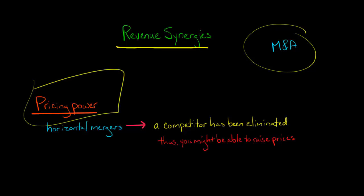The first is increased pricing power. So when you have a horizontal merger, which is a merger of two competitors, one competitor is essentially being wiped out. So the combined firm might be able to increase price.